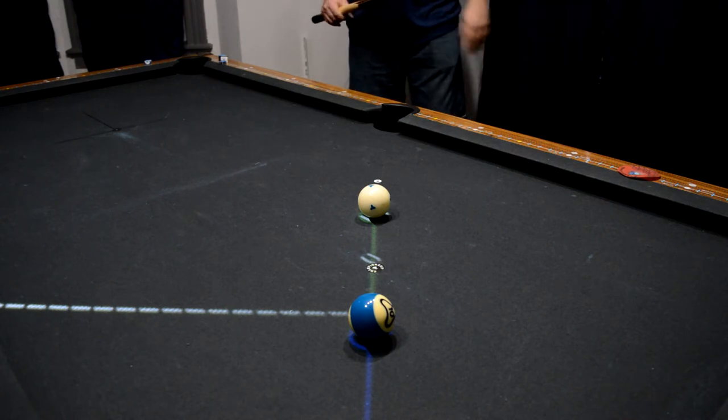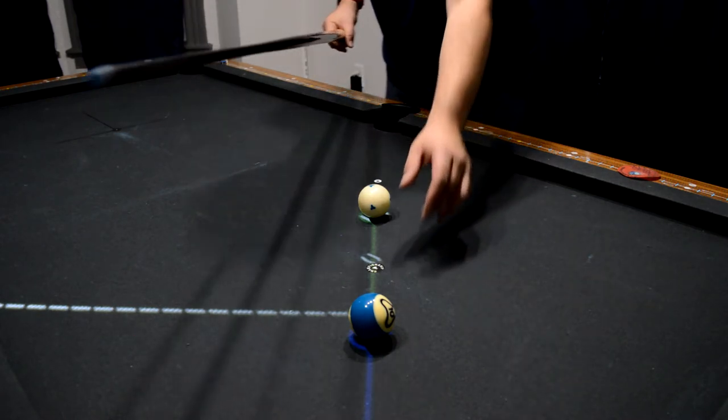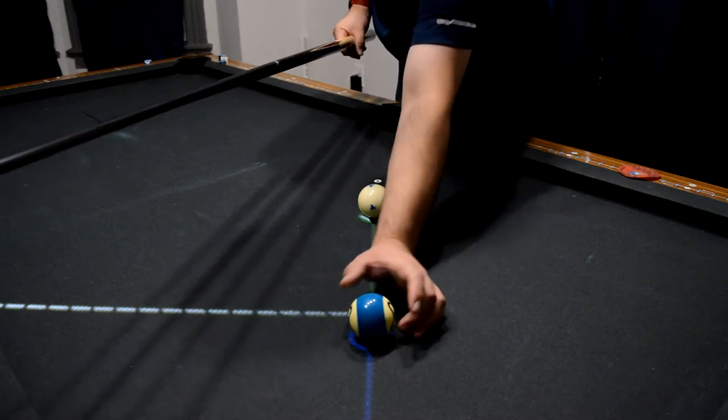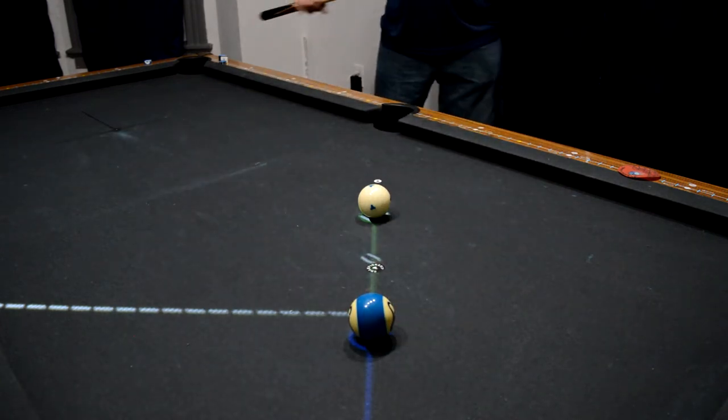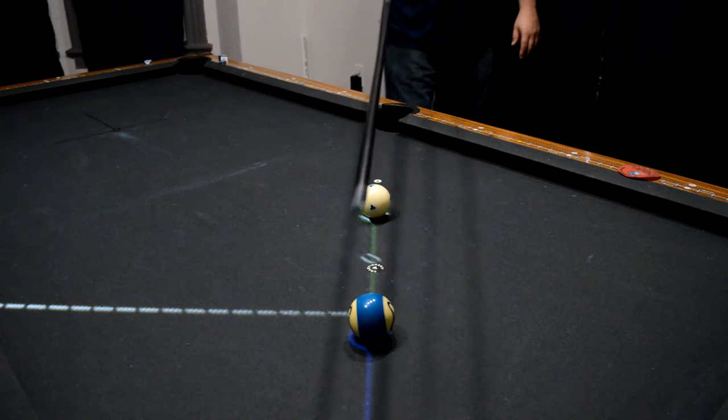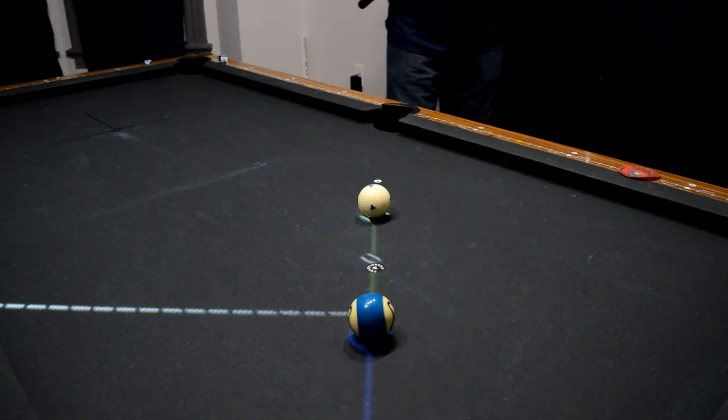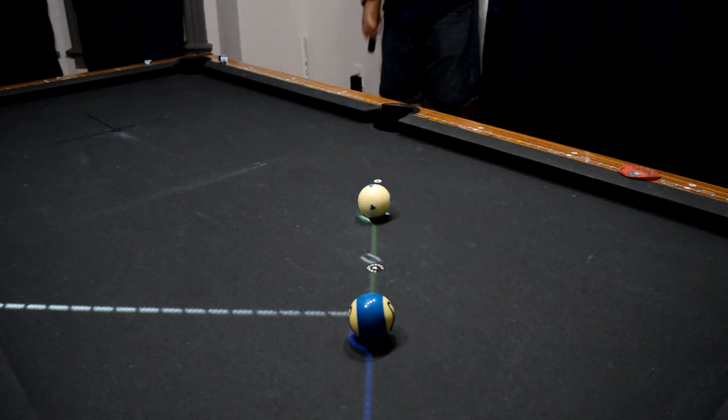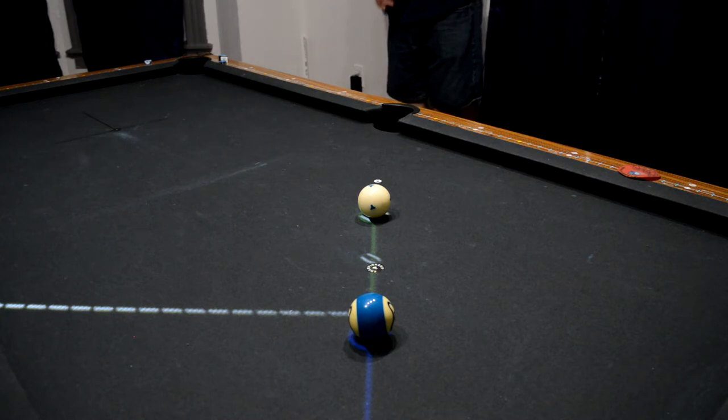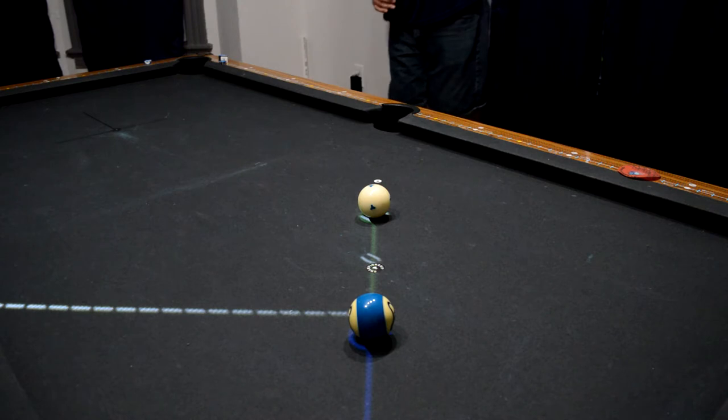As you see, I have a straight line directly into the center of the pocket. Today all I'm going to be doing is using follow, coming down on the shot line and following the object ball into the pocket with the cue ball.